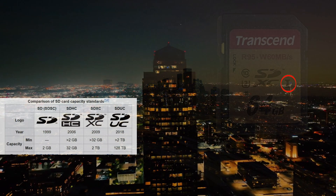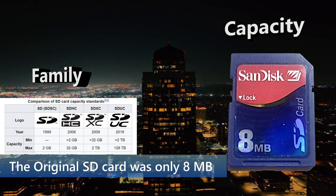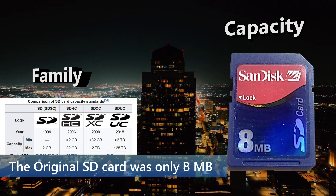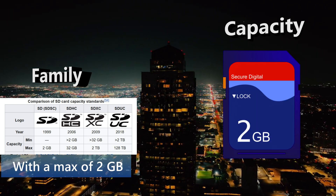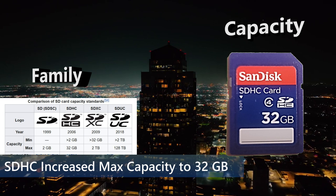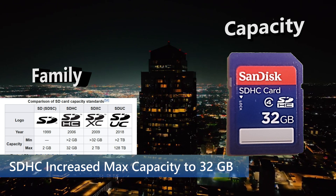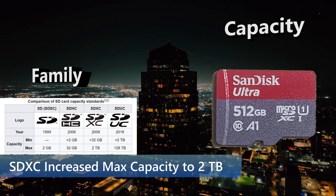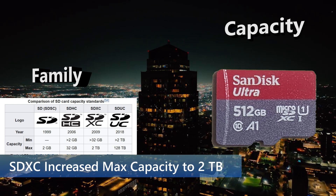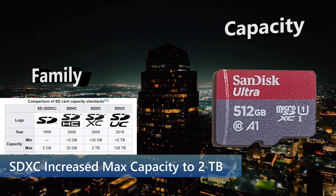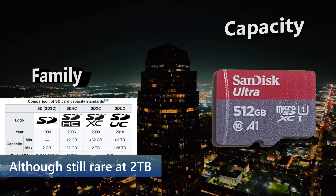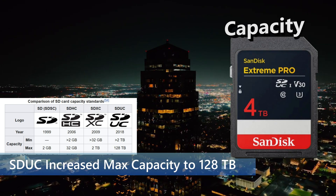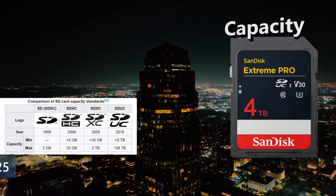SD cards come in four families. The original SD card was only 8 megabytes with a maximum of 2 gigabytes. SD High Capacity increased the max to 32 gigabytes. SD Extended Capacity increased the max to 2 terabytes, although 2 terabyte cards are still rare. SD Ultra Capacity will increase the max to 128 terabytes in 2025.